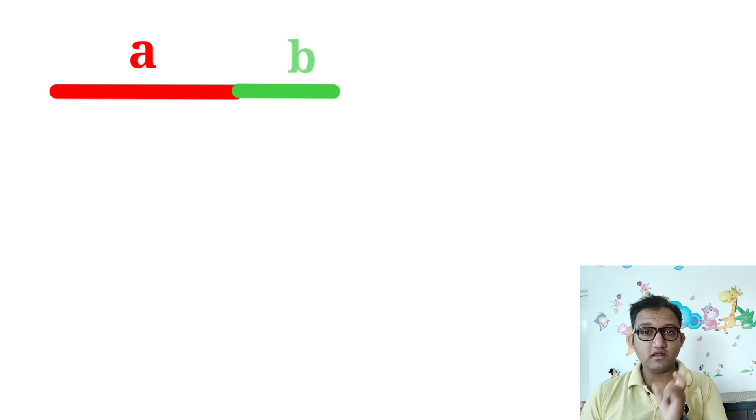We'll draw line a, and next to it we will draw another line which will be b. Remember, a and b should be of different lengths, otherwise we can give them the same name. So line a and line b we have drawn next to each other, and combined they can be written as a + b.